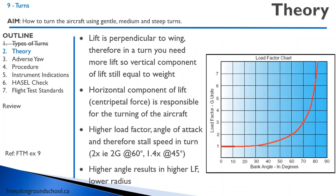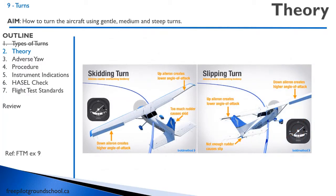Here's a load factor chart. The load factor is the amount of lift the wing is producing divided by the weight of the aircraft. An important value to remember: at 60 degrees angle of bank, the load factor is 2. That will come up regularly and you may see it on a test. At a higher angle of bank, we end up with a higher load factor and a smaller radius of turn.